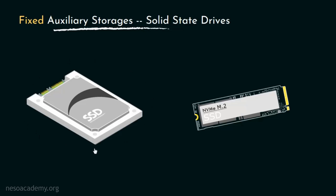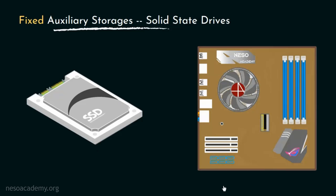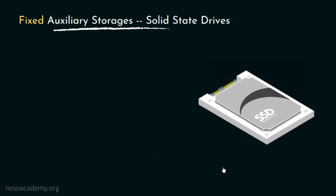Now just like the hard disk drives, the 2.5 inch SSDs are also interfaced with the motherboard using the SATA or Serial Advanced Technology Attachment cables through the SATA modules. Nonetheless, 2.5 inch SSDs use SATA 3.0 interface, due to which the data transfer rate for the SSDs can reach up to 600 MB per second. Whereas the hard disk drives of 7200 RPM, the ones more popular among desktop workstations, can achieve only up to 80 to 160 MB per second.